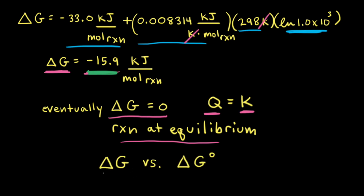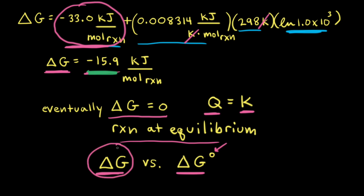Let's summarize the difference between the non-standard change in free energy, delta G, and the standard change in free energy, delta G naught. Delta G naught describes the difference in free energy between reactants and products when they are in their standard states, and since that value is constant at constant temperature, delta G naught was equal to negative 33.0 kilojoules per mole of reaction throughout all our calculations. Delta G describes the instantaneous difference in free energy between reactants and products — as long as there's a difference, there's a driving force for the net reaction to go left or right. When delta G equals zero, the reaction is at equilibrium. Delta G equals delta G naught only when reactants and products are in their standard states.